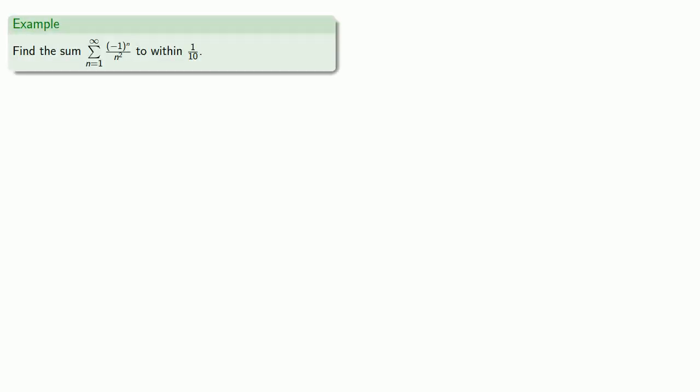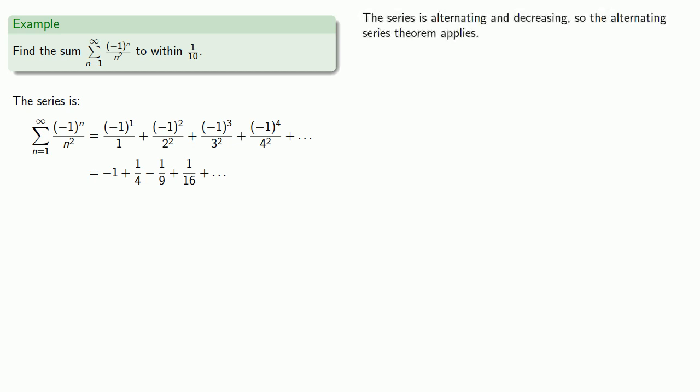So for example, let's say this series from n equals one to infinity of minus one to n over n squared. And we want to find the sum to within one tenth. So we might begin by just writing down the first few terms of the series. And we see that the series is alternating and decreasing, so the alternating series theorem applies.